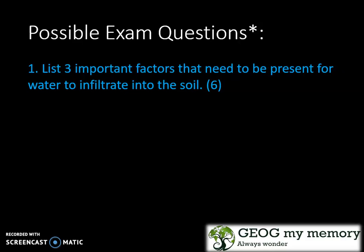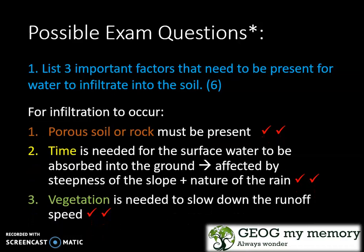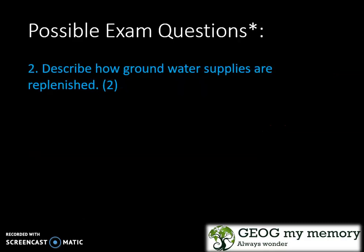Your answer needs to be along these lines. For infiltration to occur, porous soil or rock must be present. Time is needed for the surface water to be absorbed into the ground, and this is affected by either the steepness of the slope or the nature of the rain. And lastly, vegetation is needed to slow down the runoff speed.